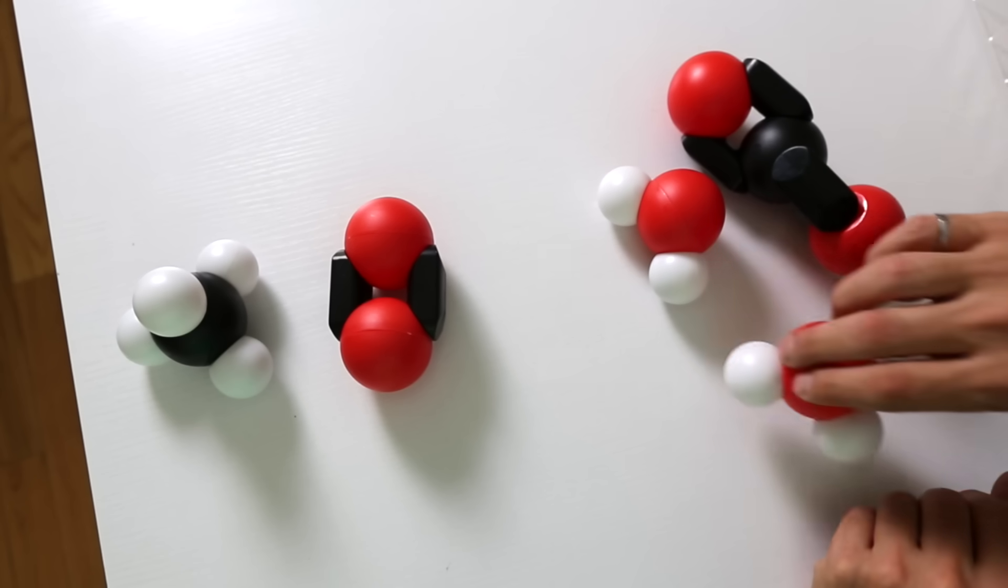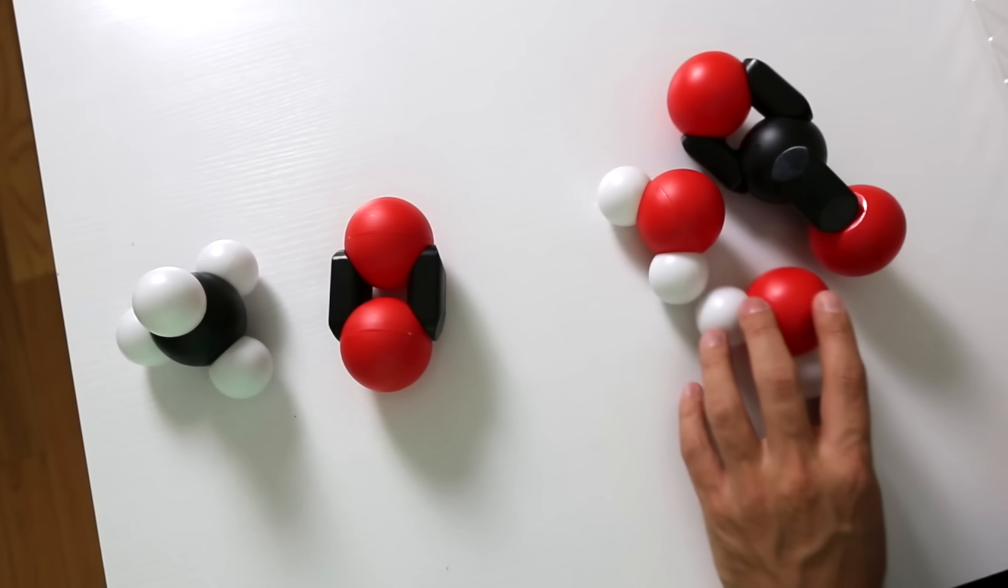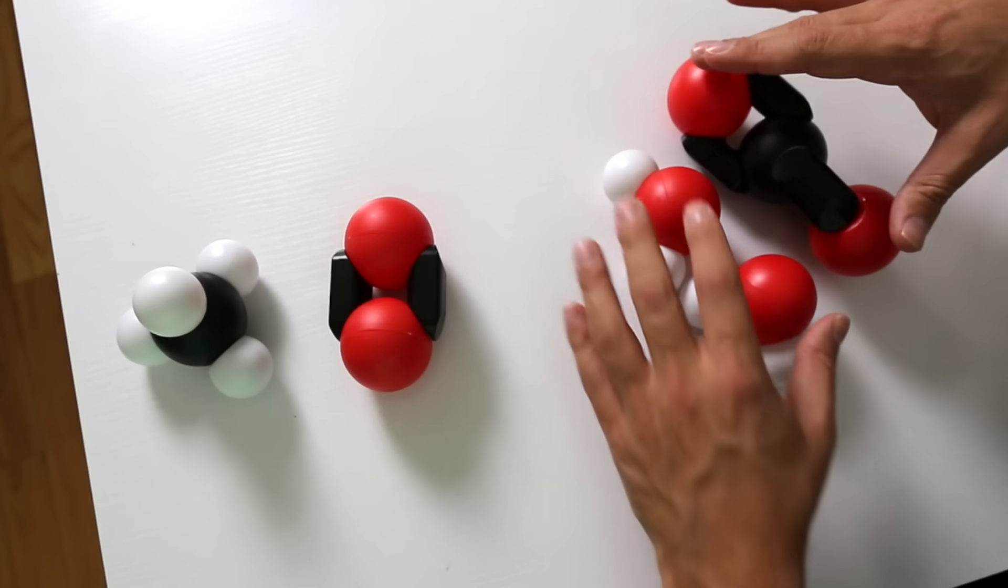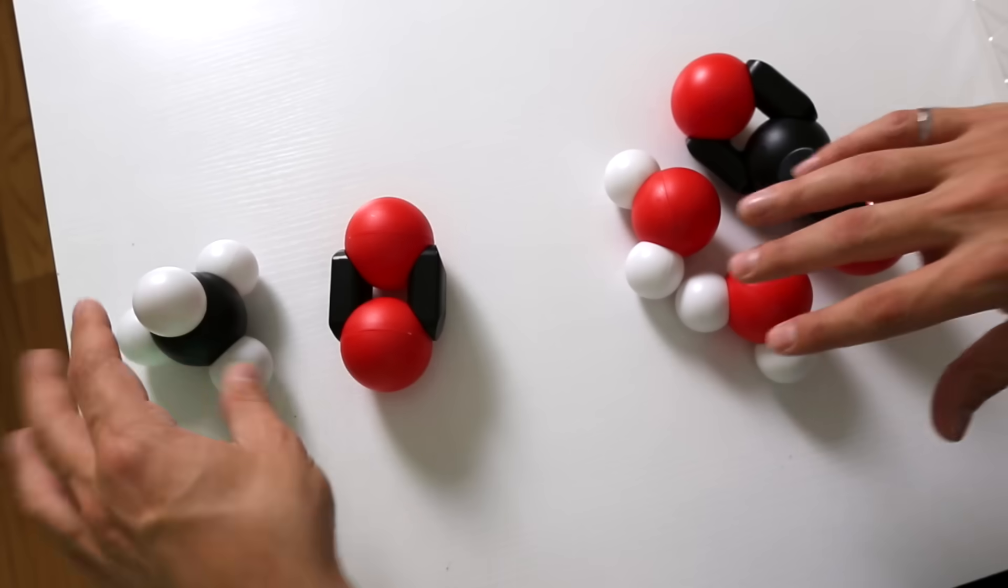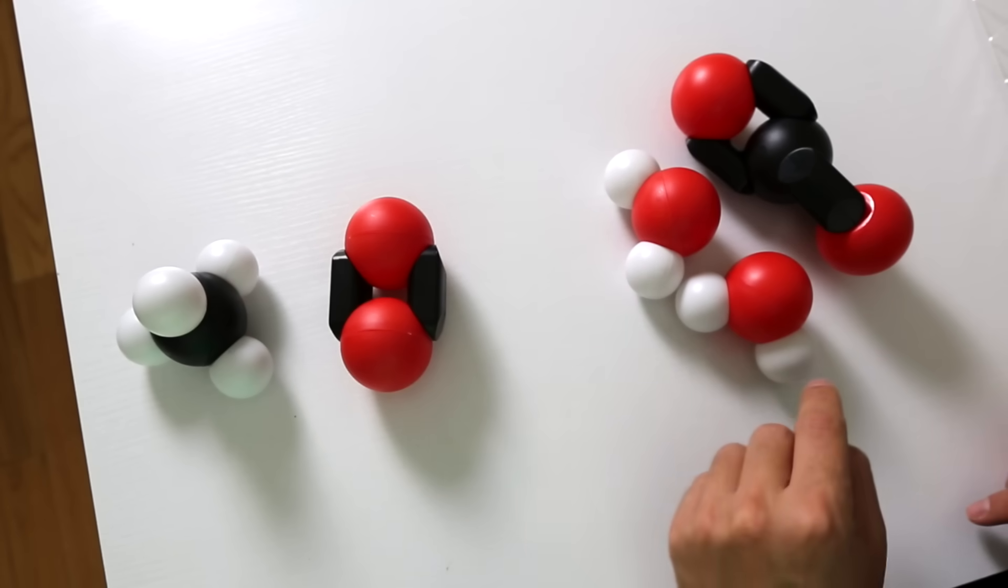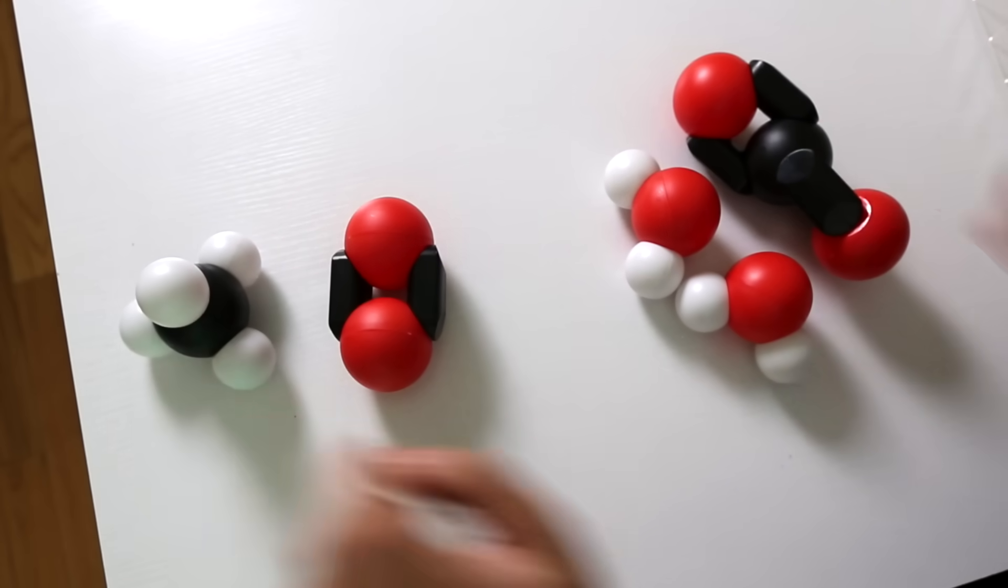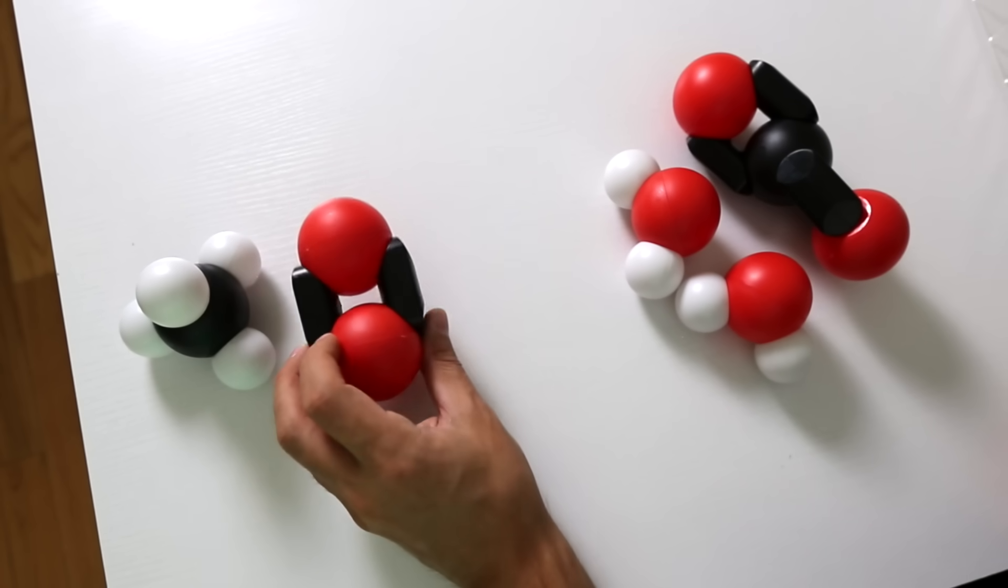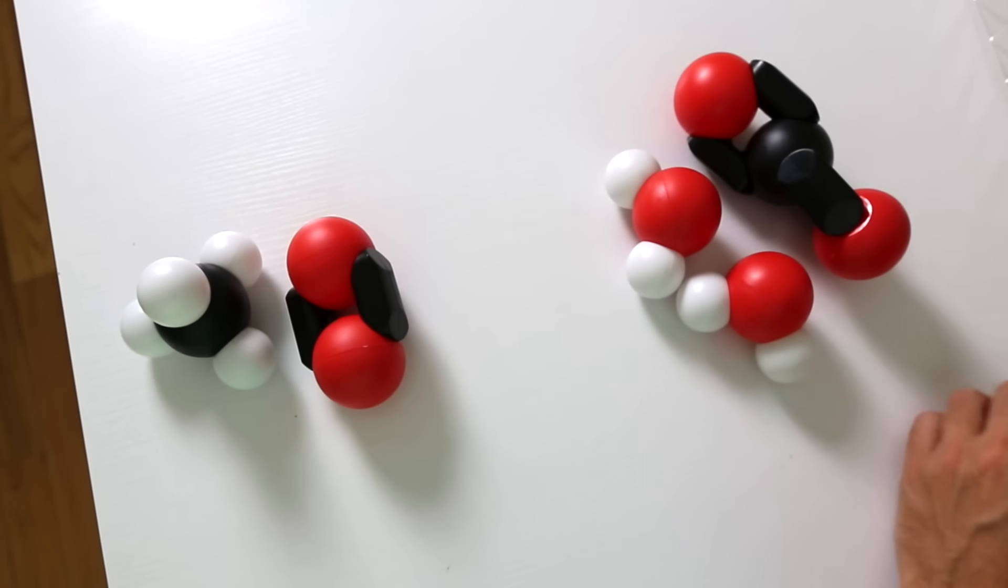So maybe I should add an additional water molecule. Now we have one, two, three, four. We've got four hydrogens so that balances out. We've got one carbon on each side so that balances out, but we only have two oxygens here and we need four on our product side.